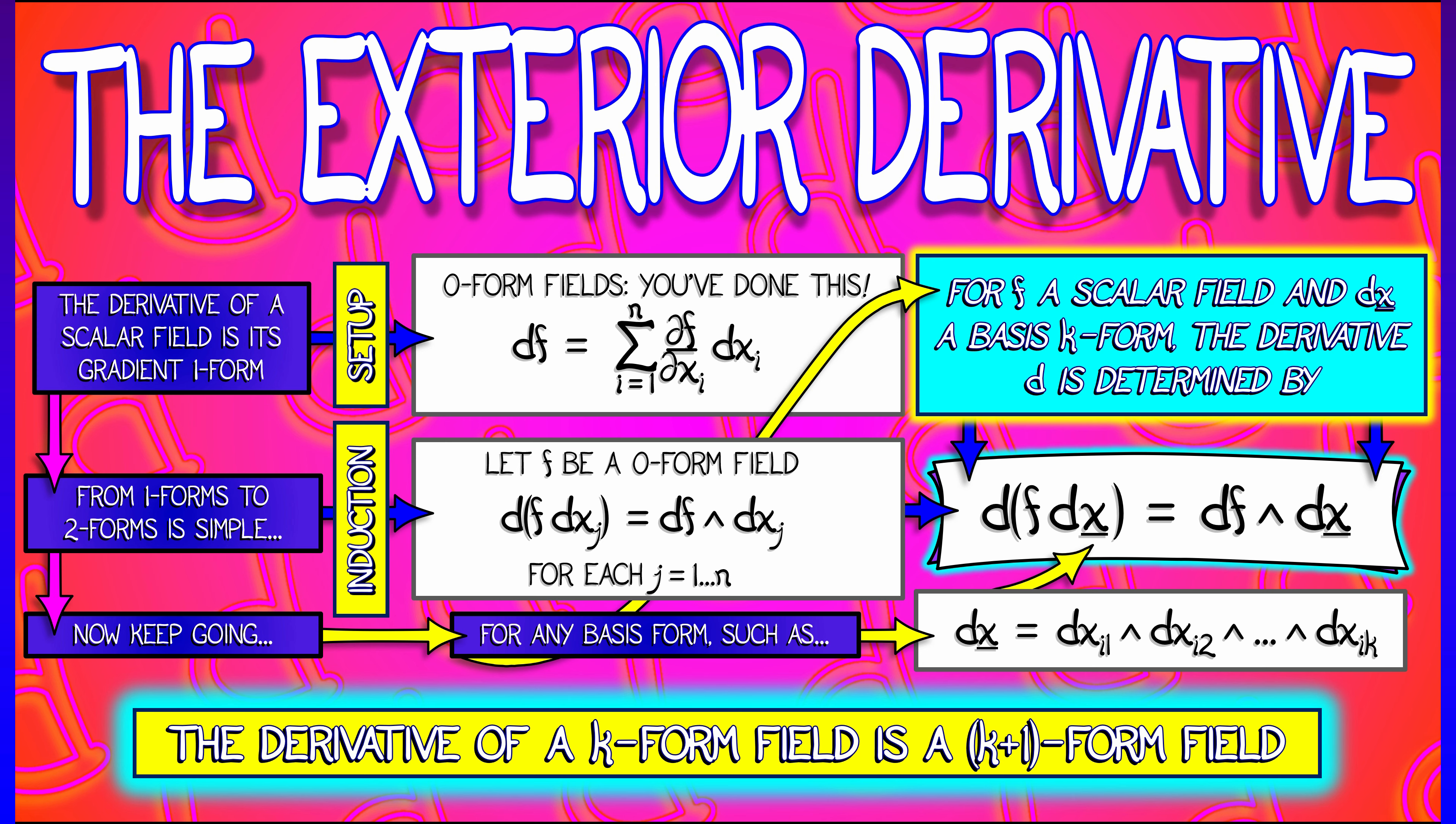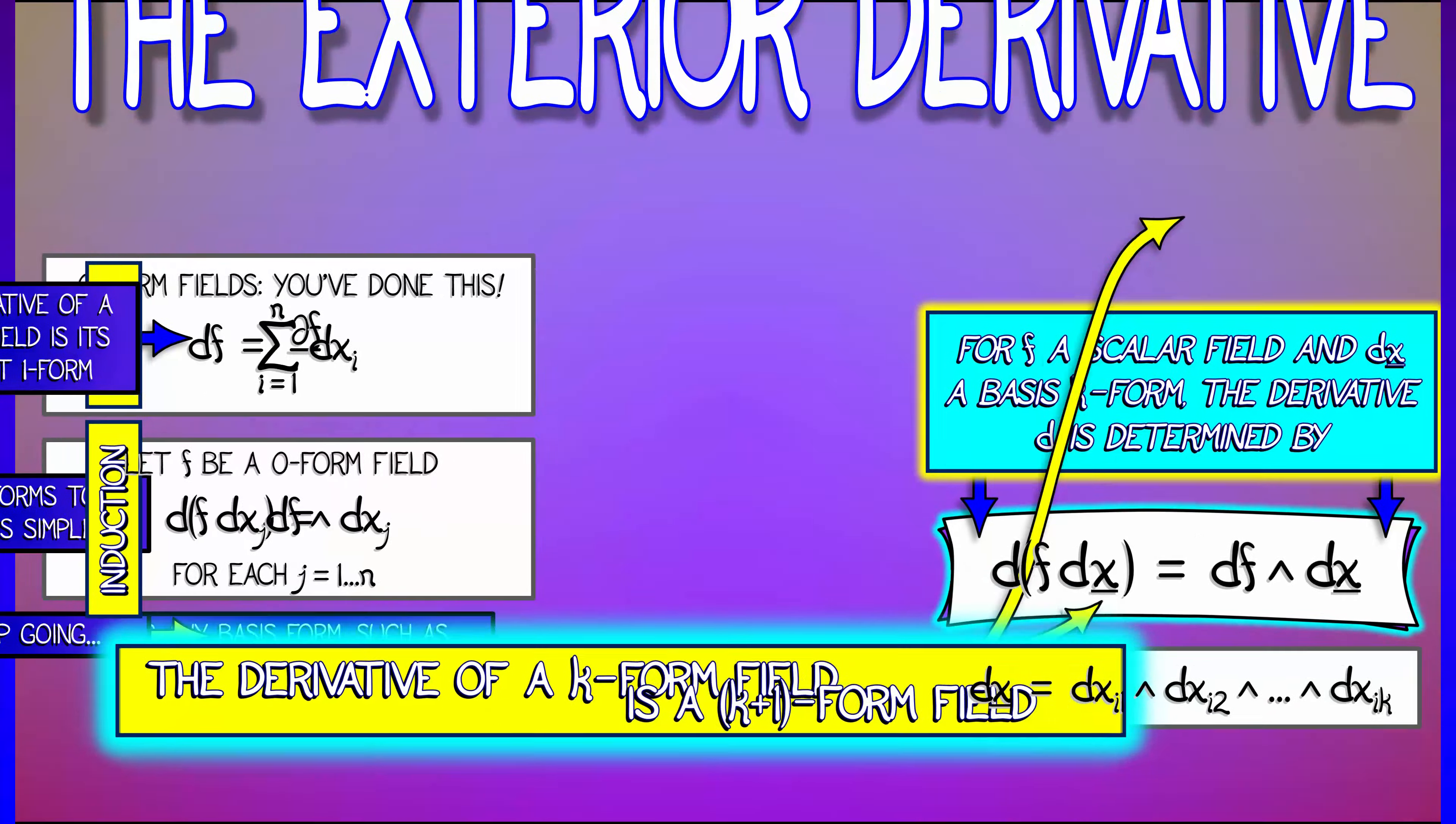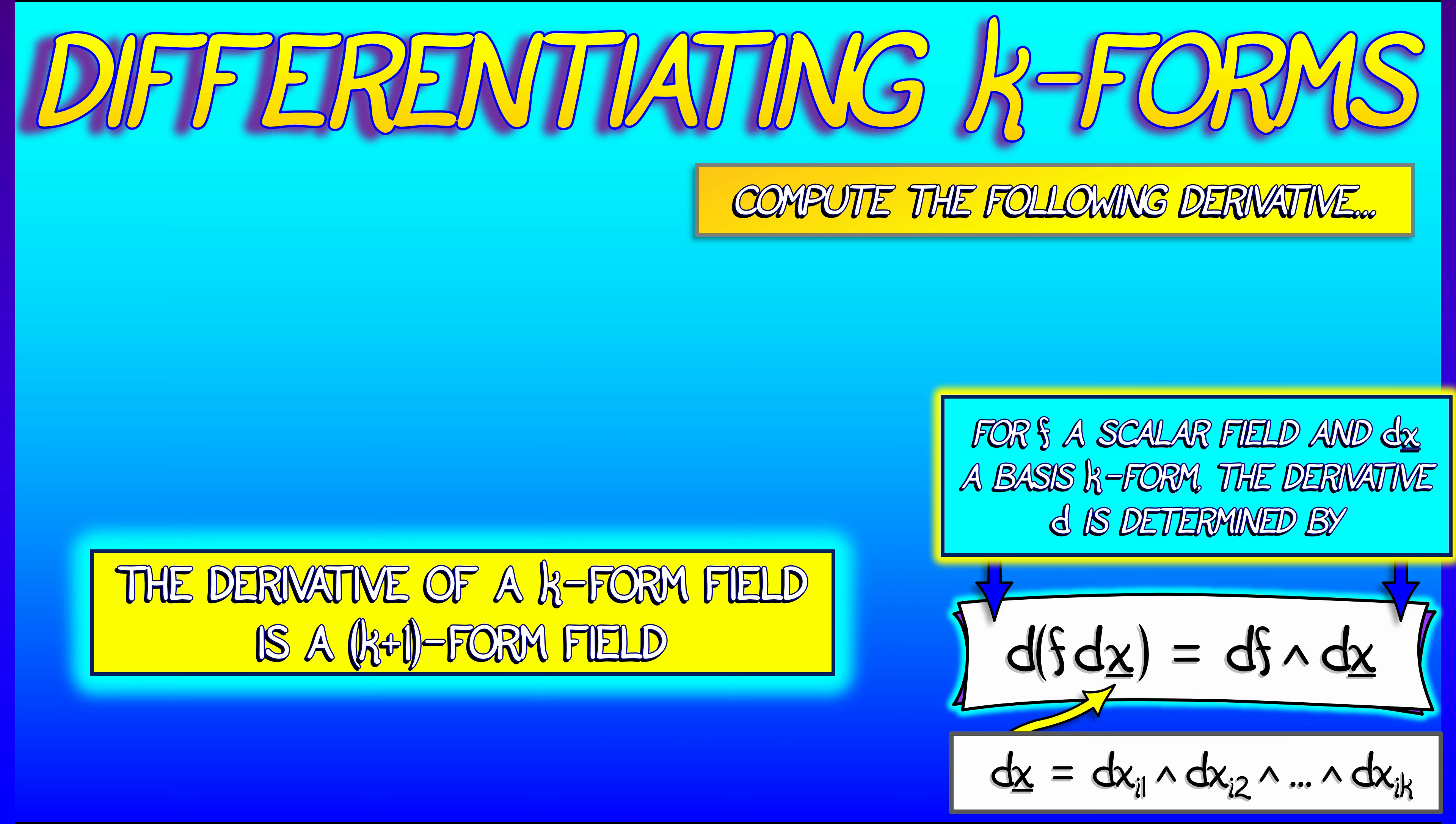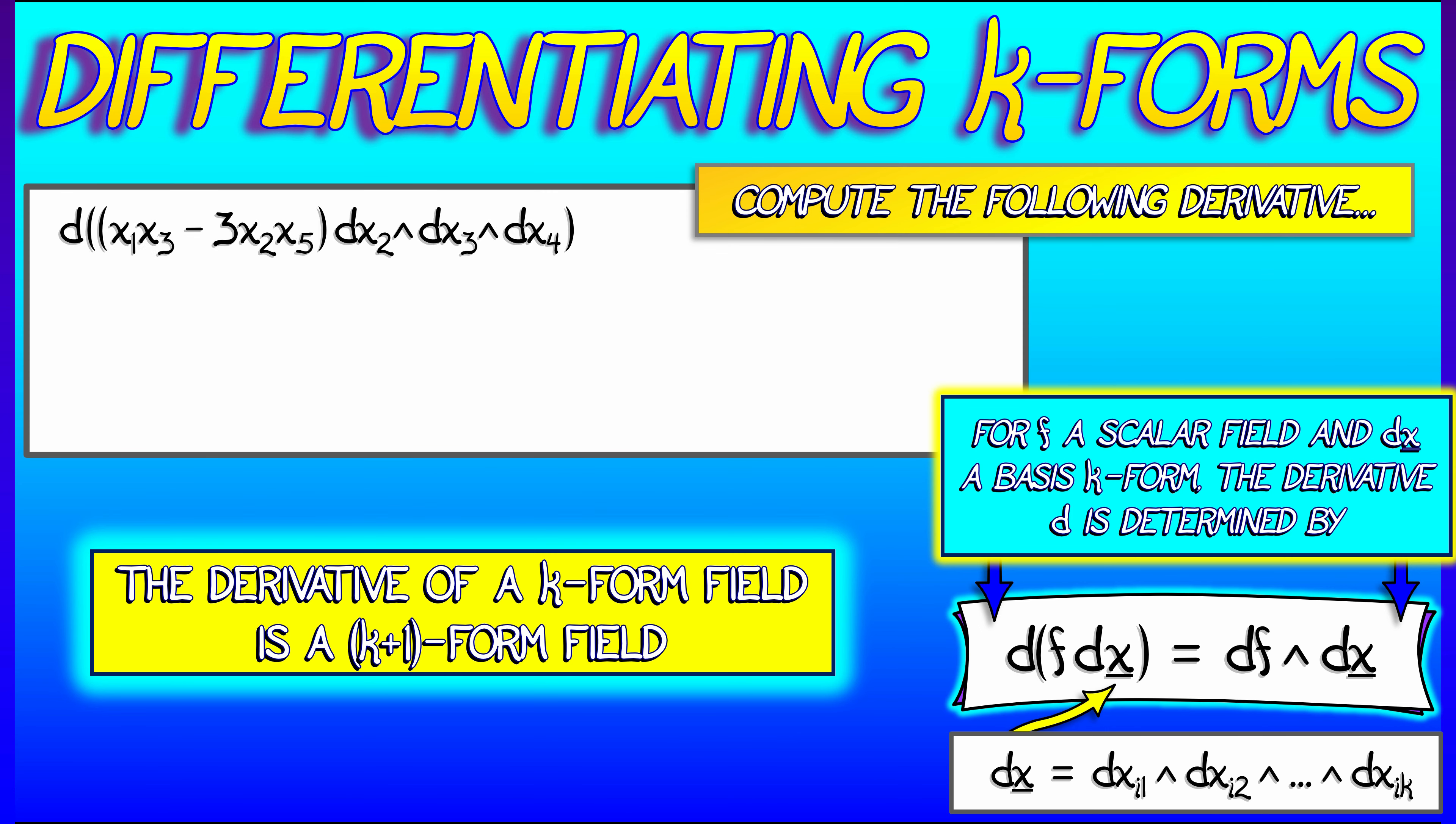That one rule is going to allow us to do computations in general. So let's see how that works in the following example. Let's say that we have the three-form given by quantity x1x3 minus 3x2x5 times dx2 wedge dx3 wedge dx4.